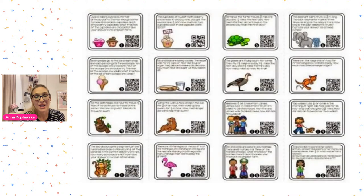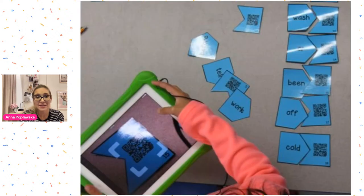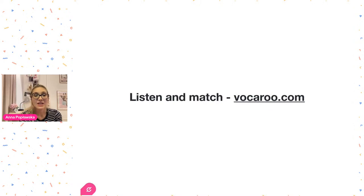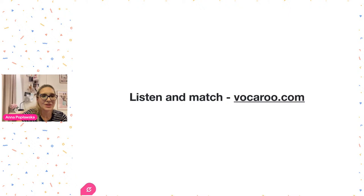I'm a huge fan of listening during classes. When you have vocabulary cards with QR codes, you can record a description of an animal, or record a question you want students to answer. If you want to work more on pronunciation, students scan the code to hear the pronunciation of a word and match it with the written word on a second piece of paper.